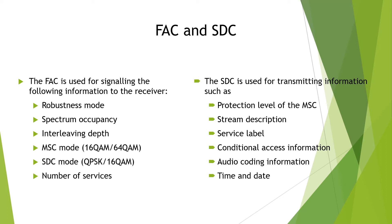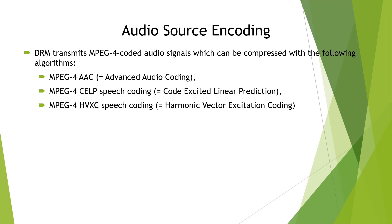The SDC is used for transmitting information such as the protection level of the MSC stream, service description, conditional access information, audio coding information, and time and date. For audio source encoding, DRM transmits MPEG-4 encoded audio signals, which can be compressed with any of three algorithms: MPEG-4 AAC (Advanced Audio Coding), MPEG-4 CELP (Code Excited Linear Prediction speech coding), or HVXC (Harmonic Vector Excitation Coding).